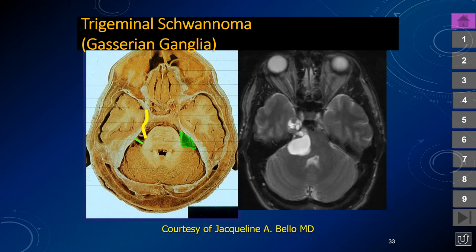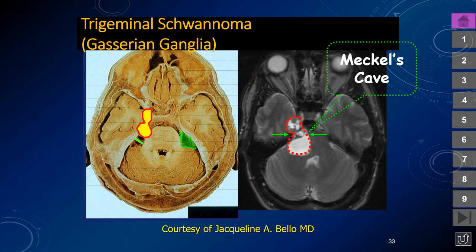We can also have trigeminal schwannomas. These lesions are often bilobed, with one lobe inside the cavernous sinus and a second lobe in the posterior fossa cerebellopontine angle cistern. The tumor may be larger in one location versus the other. In this example, the posterior fossa component looks largely fluid-like, possibly the oldest portion. The central constriction may be due to the dural reflections forming the margins of Meckel's canal.